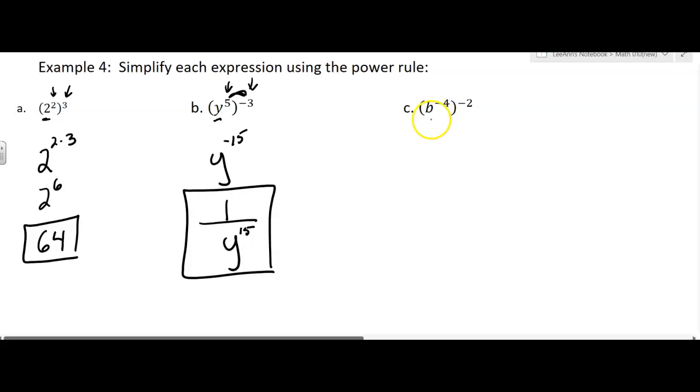Now what happens here? We've got a base of b, an exponent of negative four, but then an outer exponent of negative two. There's more than one way you could do this problem. You could say, oh, I'm going to take care of that b to the negative four, and then I'll take care of the negative two. But probably in this case, it's easier to just multiply them. So b to the, now think, what's negative four times negative two? If you want to write it, it would look like negative four times negative two. And so that's b to the eighth, and that's fine.